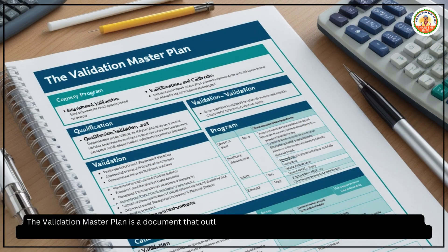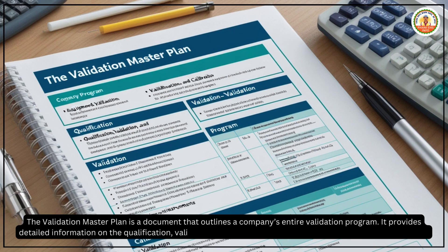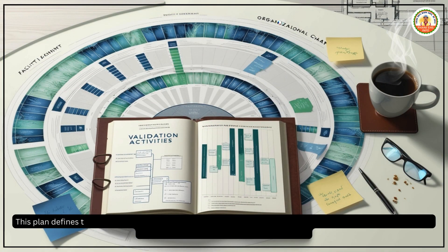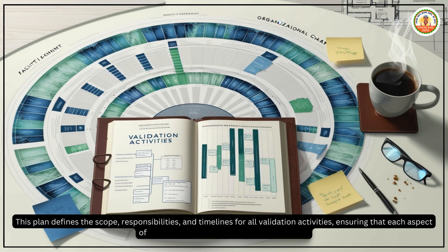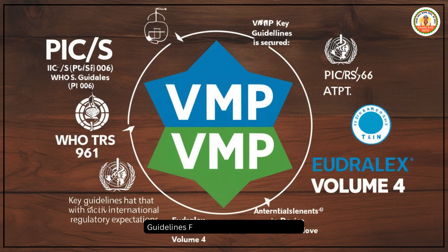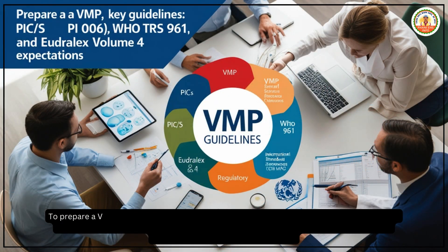The Validation Master Plan is a document that outlines a company's entire validation program. It provides detailed information on the qualification, validation, and calibration of equipment, instruments, and systems. This plan defines the scope, responsibilities, and timelines for all validation activities, ensuring that each aspect of the facility meets regulatory requirements.